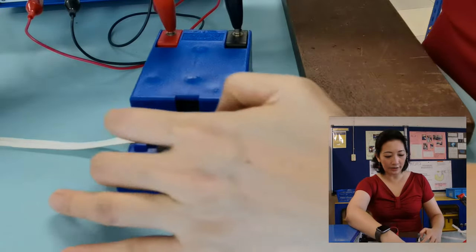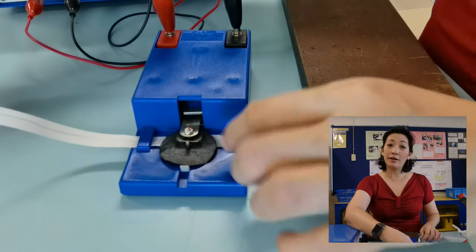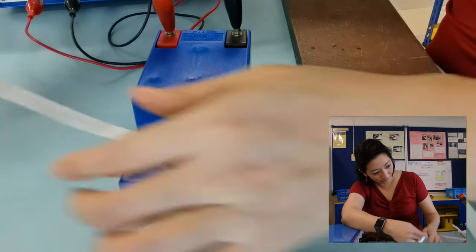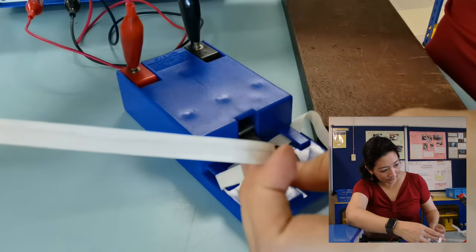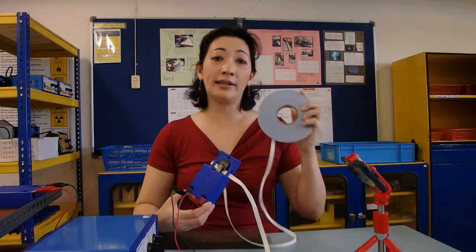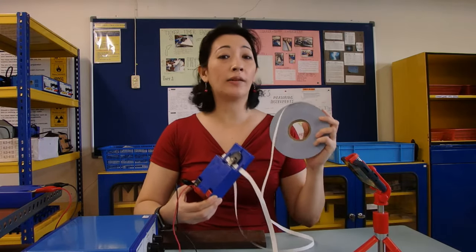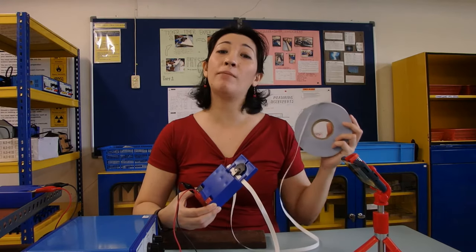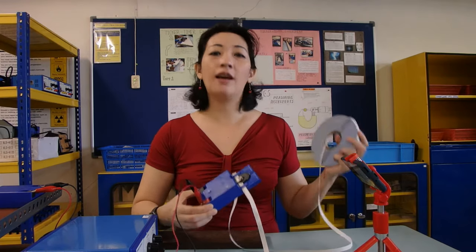Now you can see that the dots are a lot clearer due to the presence of the carbon paper. The ticker timer is always used with ticker tape. The purpose of this apparatus is to enable us to measure motion. From the experiment, we can measure displacement, velocity, as well as acceleration.